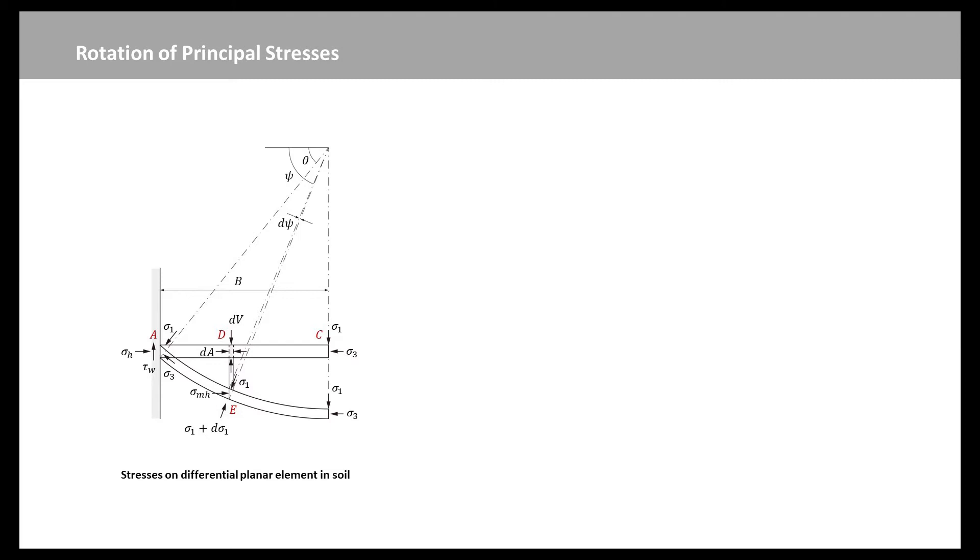The minor principal stresses, sigma-3, on the differential planar element behind the cut act along the concave arch shown in the figure. Whereas the major principal stresses, sigma-1, are perpendicular to the concave arch. The shape of the concave arch is assumed as an arc of a circle. The width of the differential planar element at depth z is b. The active lateral stress on the cut, sigma-h, can be calculated by considering the horizontal force equilibrium in the triangular element at the left edge of the concave arch. The lateral stress on the cut is given by this equation, where theta is the angle of the minor principal plane with respect to the horizontal at the cut.